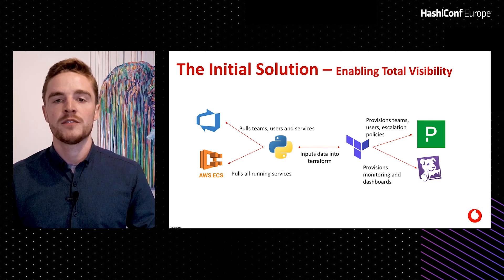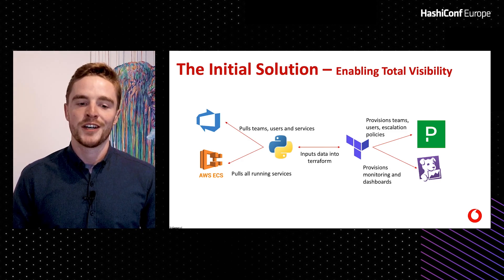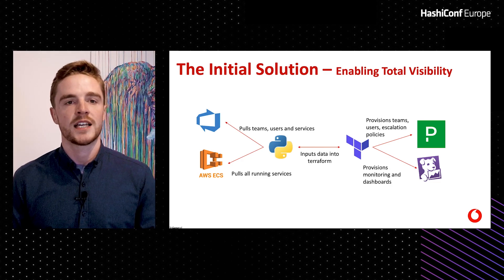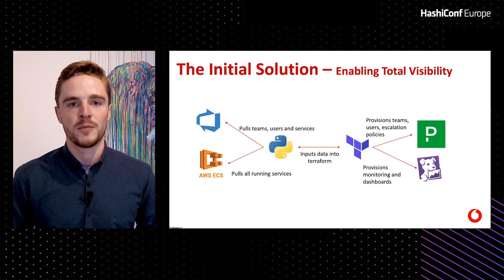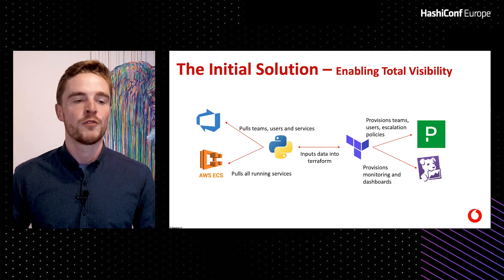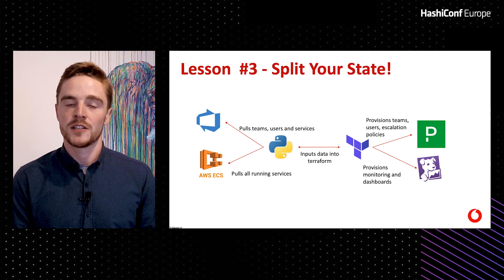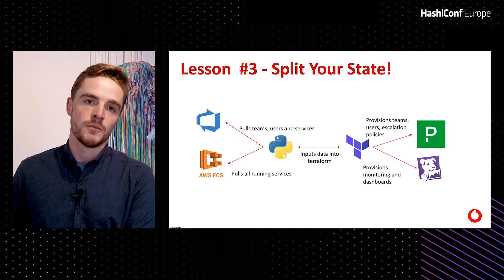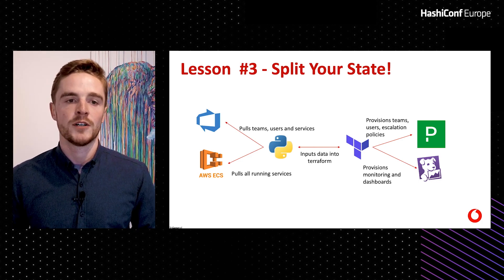When we achieved this, we needed to train developers to be on call, which meant sitting with the solution for a couple of weeks. During that time we discovered our state file had become huge — we were provisioning over 150 developers, 100 services, monitors, dashboards, and performance metrics. As a result, Terraform was taking 17 minutes to run, which would significantly delay delivery. This led to lesson three: split your state. We split the state file into PagerDuty users, dashboards, API tests, and monitors separately. Terraform could then run much faster and no longer be a bottleneck.